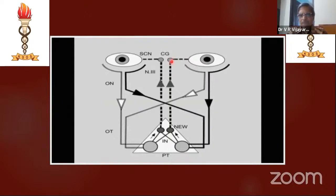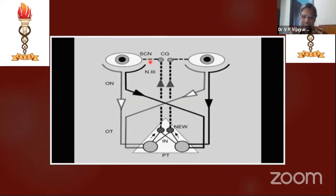There are four parasympathetic ganglions in the head: the mandibular, pterygopalatine, otic ganglion, and ciliary ganglion — but the ciliary ganglion is relevant for the pupil. From the ciliary ganglion, the short ciliary nerves (SCN) are postganglionic parasympathetics supplying the constrictor pupillae. The most important point about these short ciliary nerves is that they are the only myelinated postganglionic fibers in the whole body — all other postganglionic parasympathetics have no myelin sheath.